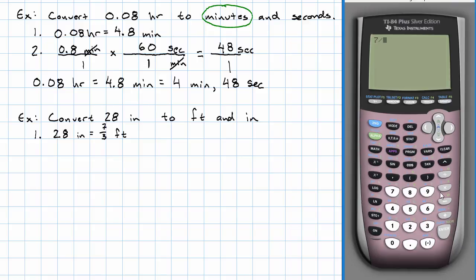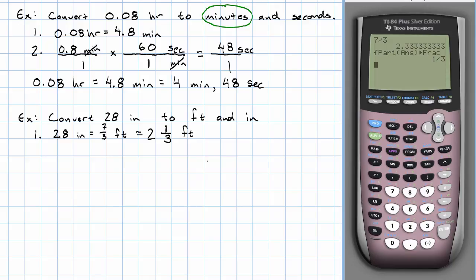I'm going to take my 7 thirds. That's going to be 2 and a fraction part. How do I get the fraction part? I say math num f part. Put in my answer from before and convert the result to a fraction. So that will be 2 and 1 third feet again.